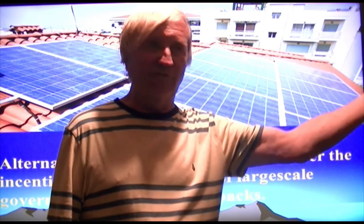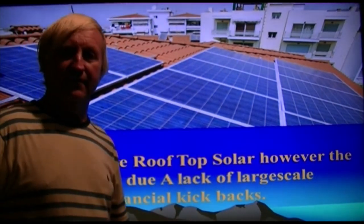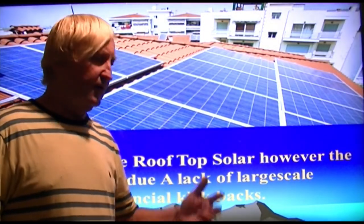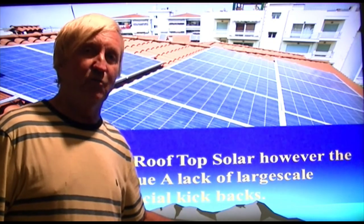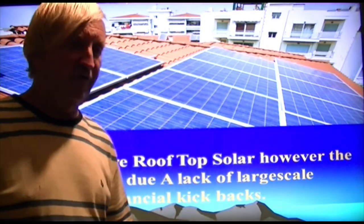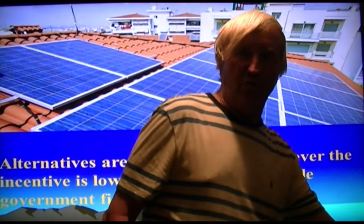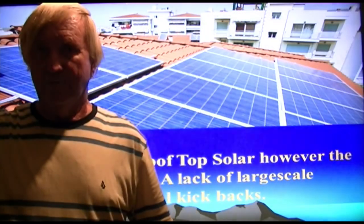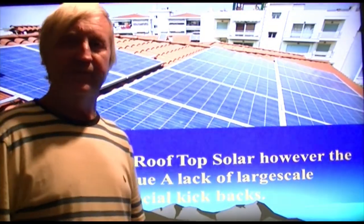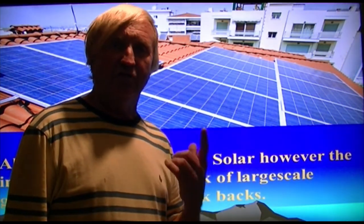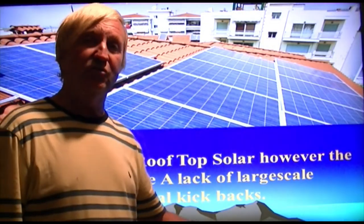Now, what do we do to get electricity from the desert to the cities where we need it? We have to build more transmission lines, which fragments the deserts. Critical habitat fragmentation — taking large areas that species need to survive and cutting them into little blocks — is actually driving many species onto the threatened and endangered species lists.